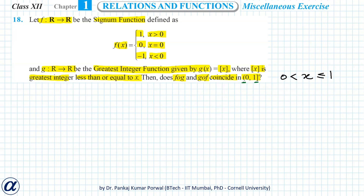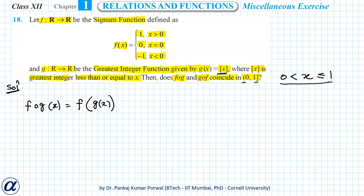Let's find fog and gof on this interval. fog(x) equals f(g(x)). Since g(x) is the greatest integer function and x is in the interval 0 < x ≤ 1, we divide the interval into two parts: 0 < x < 1 and x equals 1. When 0 < x < 1, g(x) equals 0.